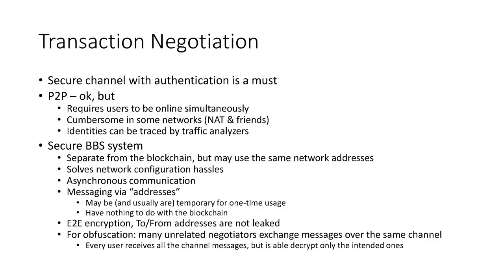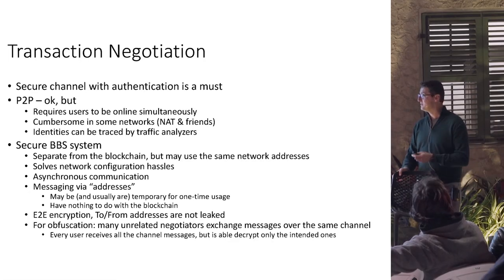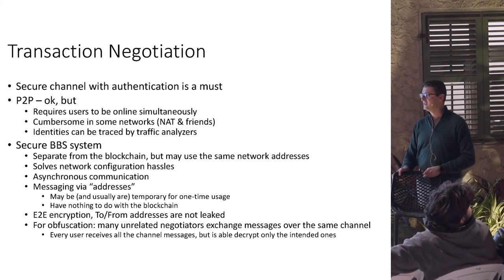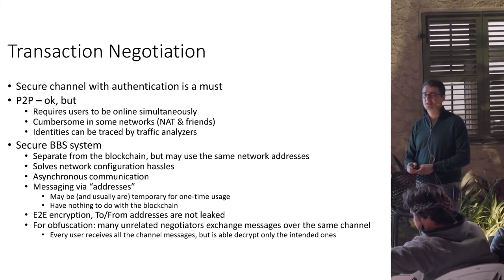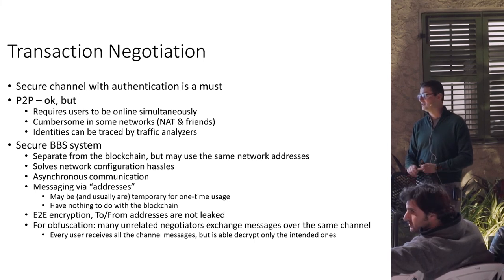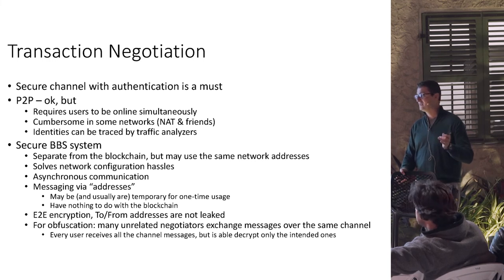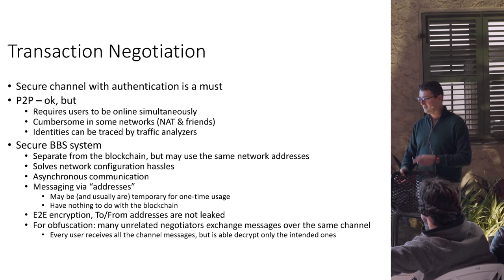In order to build a transaction, users must collaborate, and they must do it over a secure authenticated channel. If I want to send something to you, I want to be sure I'm talking to you. There is an option for peer-to-peer communication, but it's not always possible. So we created what we call a secure BBS system — a system of encrypted message exchange where I can send you a message and no one should be able not only to see the contents, but even to know that the message is intended for you. By sending such messages, users eventually build a transaction and broadcast it.